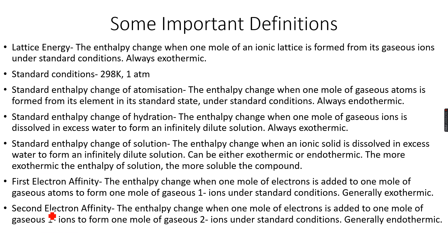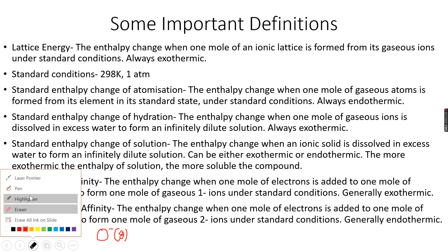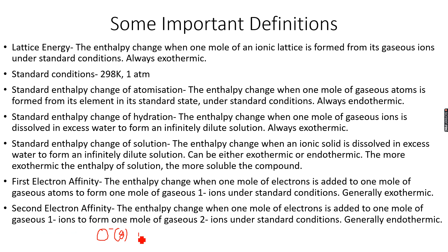We also have something called second electron affinity. Second electron affinity is the enthalpy change when one mole of electrons is added to one mole of gaseous one-negative ions to form one mole of gaseous two-negative ions under standard conditions. So instead of adding electrons to gaseous atoms, we add electrons (e⁻) to gaseous one-negative ions to give O²⁻ gaseous two-negative ions.